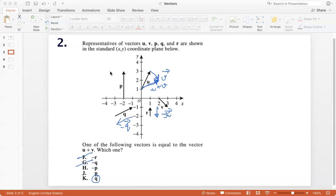Negative vector p, same measure as p, but opposite direction. Again, that's not u plus v and neither is vector p. So q is the vector which is equivalent to u plus v.